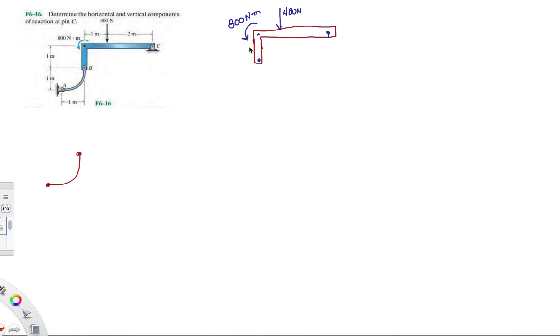Looking at this, this is pressing down, so it's going to be compressing member AB. So that's the way I'm going to draw it in compression. It's going to be BY going into the pin, and then BX.